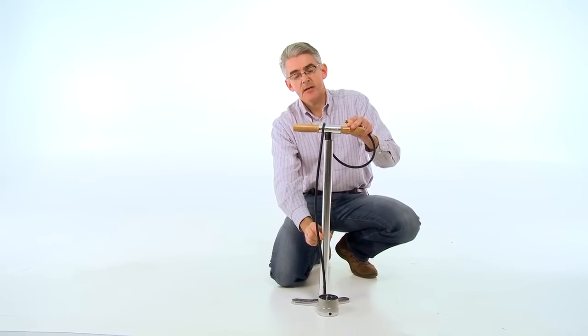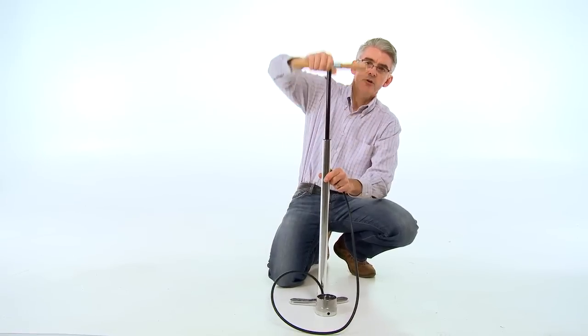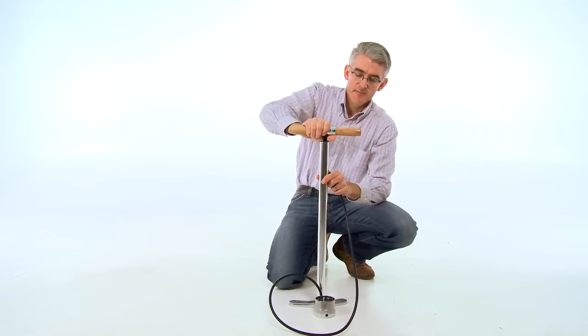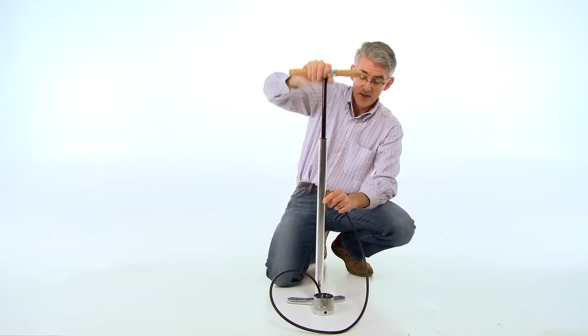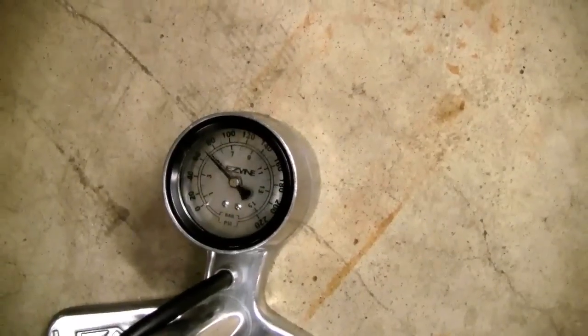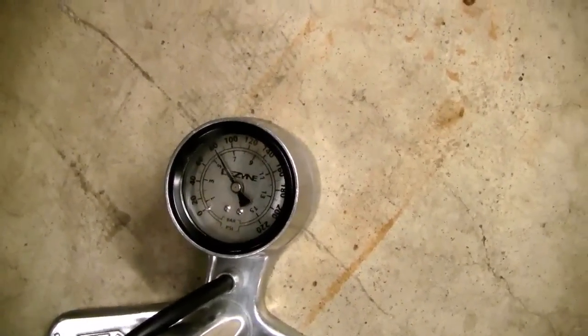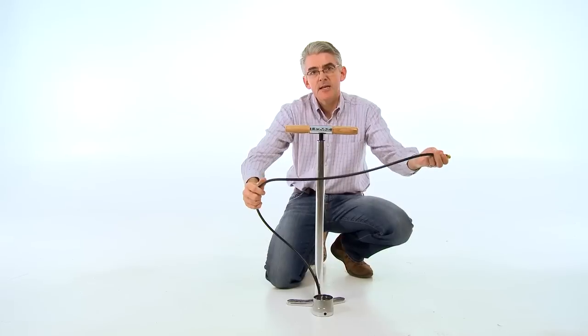CNC milled barrel with super smooth movement of air. Two and a half inch gauge reads up to 220 psi. It's got a long 47 inch hose.